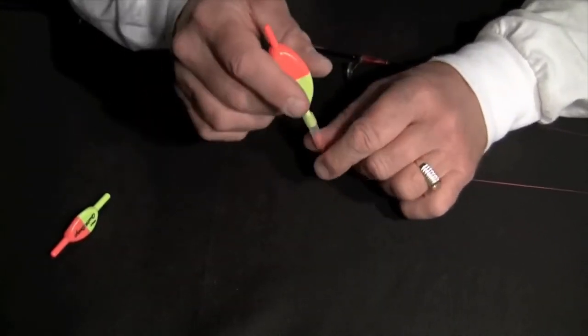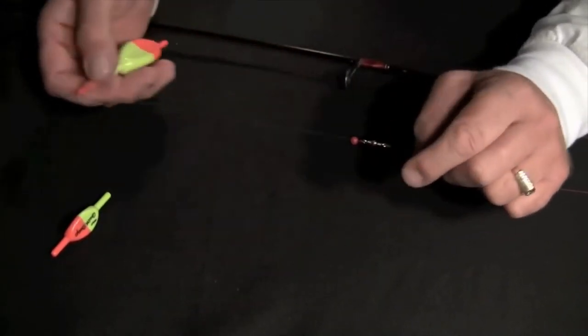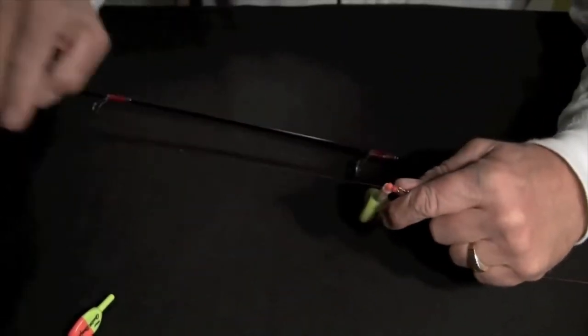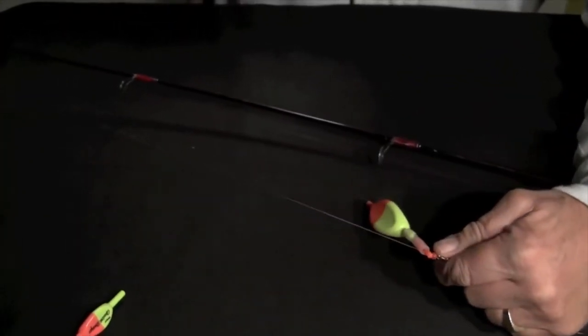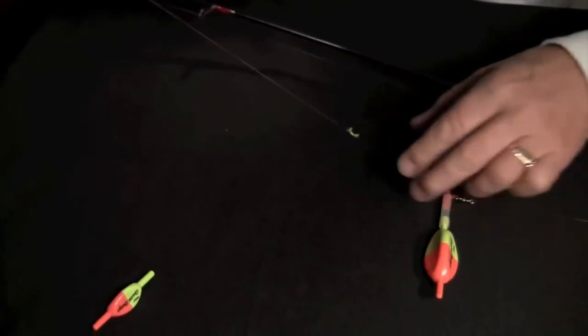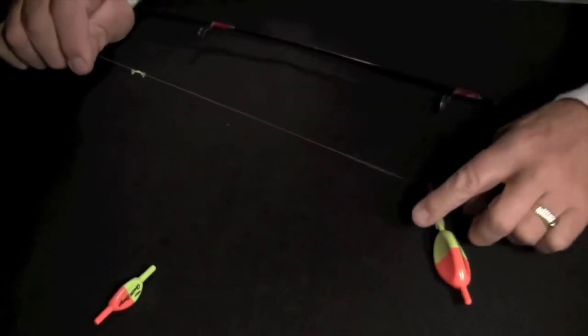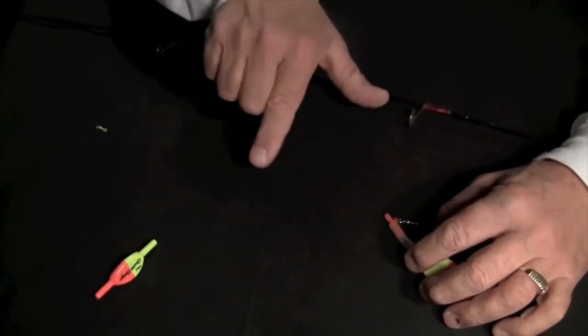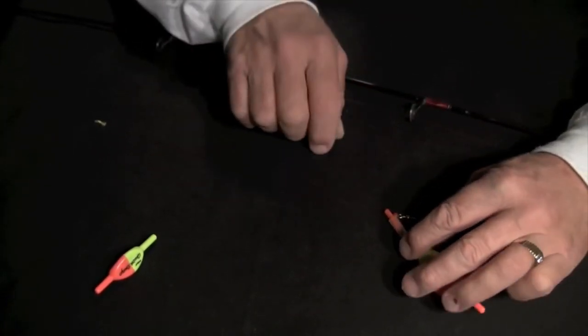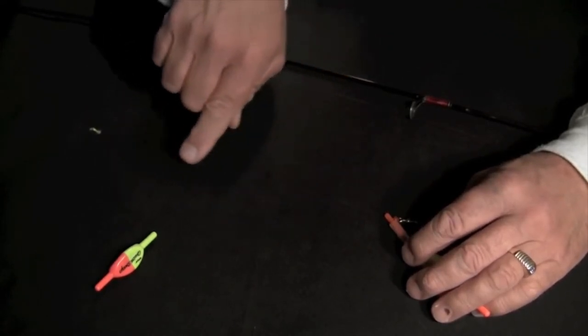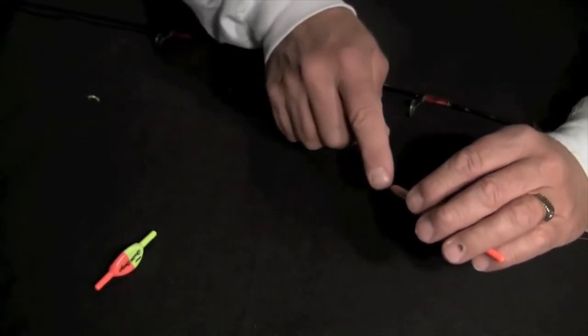The nice thing about this float is that you can use it as a fixed float. This is slip. You can see here how it slides on your line. And your knot would come right up against the side of it here. This is your stop knot. Your knot would come right up against the side and set your depth. Most times you won't need a bead in between the knot and the connector. But if you're using FireLine or PowerPro, it's a real small diameter, you might have to put a bead in here to ensure that the knot doesn't go through the side opening.